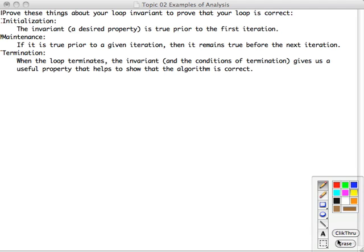And we show that when the loop terminates, the invariant and the conditions of termination give us a useful property that helps show that the algorithm is correct.